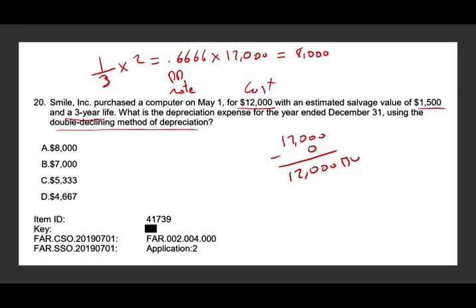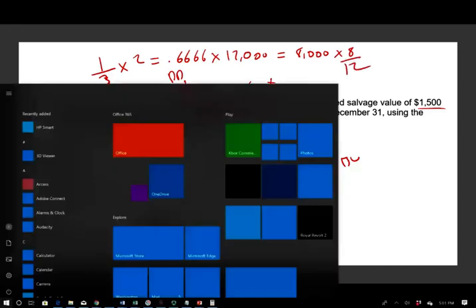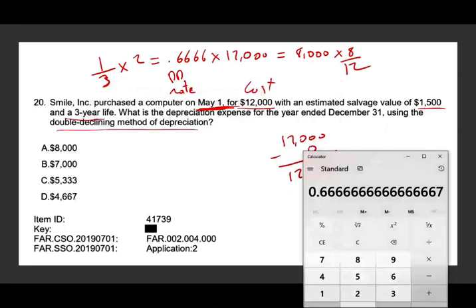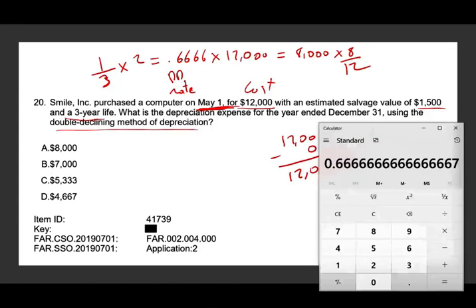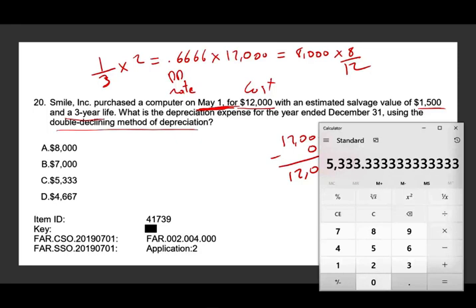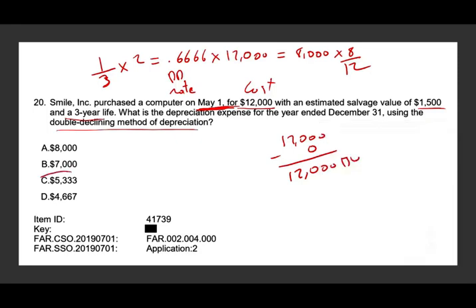This is where the purchase date matters. You bought it May 1st, so you have May, June, July, August, September, October, November, and December — 8 months. You have to prorate it because you did not buy the asset at the beginning of the year. Take 8 ÷ 12 = 0.6667, then multiply by $8,000. The answer is $5,333.